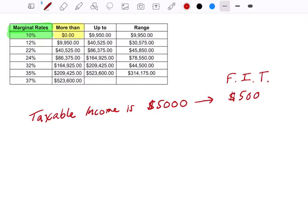So notice, in our case, we only had to use two columns. We didn't need to use really anything else here, just the more than and the marginal rate. That's a taxable income of $5,000. It's just 10% of the income. And the same is true for every number up until, this is where this starts to come into play, $9,950.